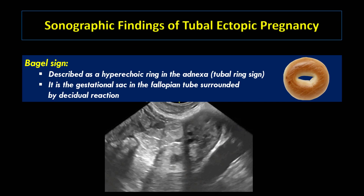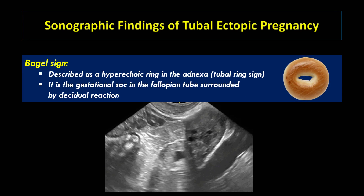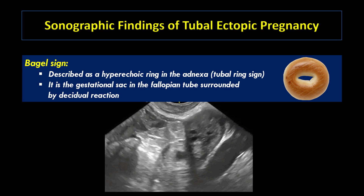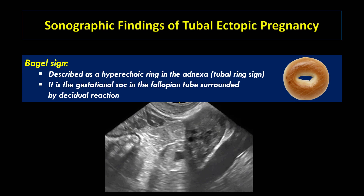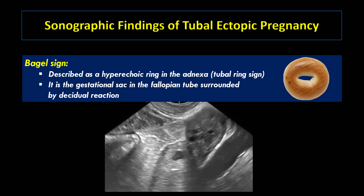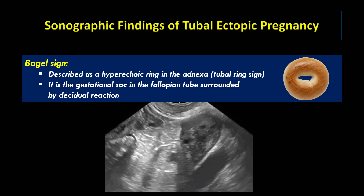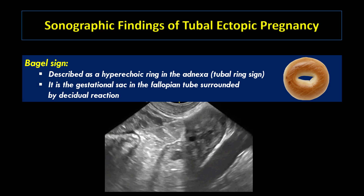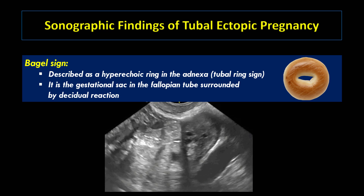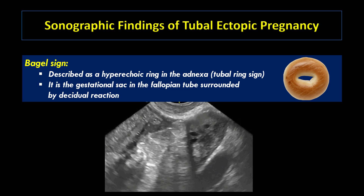Let's discuss ultrasound findings in tubal ectopic pregnancy. Bagel sign or tubal ring sign is described as a hyperechoic ring in the adnexa — it is the gestational sac in the fallopian tube surrounded by decidual reaction. On ultrasound, the central anechoic hole of the bagel represents the gestational sac and the thick surrounding echogenic dough represents the trophoblastic tissue. A yolk sac or fetal pole may be present, confirming ectopic pregnancy. As you can see in this case, there is a hyperechoic ring with thick wall seen medial to the left ovary, representing the bagel sign of tubal ectopic pregnancy.